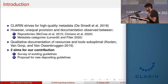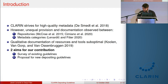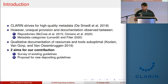On the one hand, differences in metadata provision are observed between CLARIN centers, where some repositories generally provide richer documentation than others. On the other hand, differences in provision are also observed between metadata categories, where in the case of linguistic corpora, information about annotation is typically provided at a significantly lower rate than the information about corpus size.